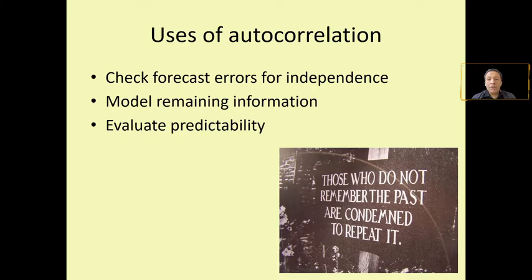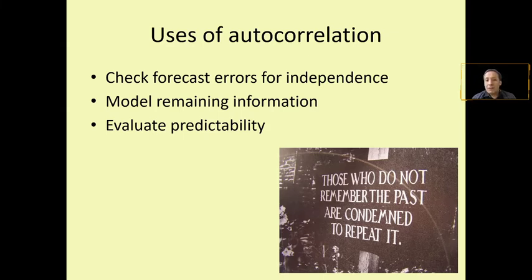The first use of autocorrelation is to check forecasting errors for independence. Imagine you forecasted something using one of our previous methods. With the resulting errors from comparing your forecast and the actual values, you can run an autocorrelation test. If there is autocorrelation in the errors, that means you still have valuable information remaining in those errors that could be used to refine your predictions.